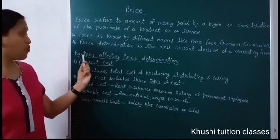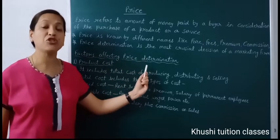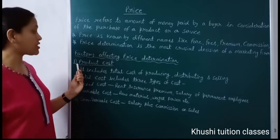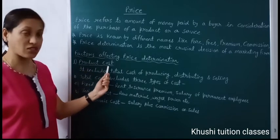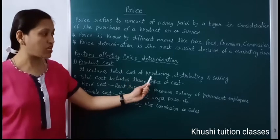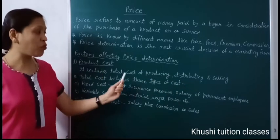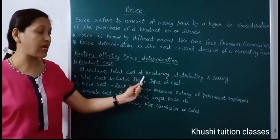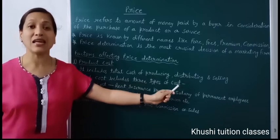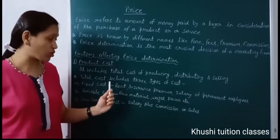Now we learn what are the factors which affect price determination of a product or a service. The first factor is product cost. Product cost includes total cost of producing, distributing and selling. Product cost में पूरी manufacturing cost आती है — इस product को distribute करने के लिए, sale करने के लिए जितने भी expenses होते हैं, सभी include होते हैं।